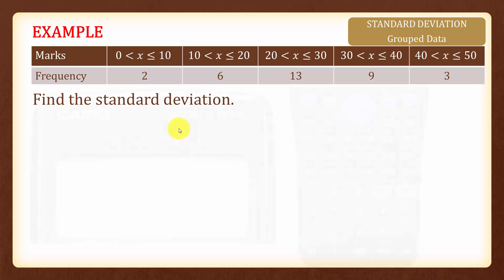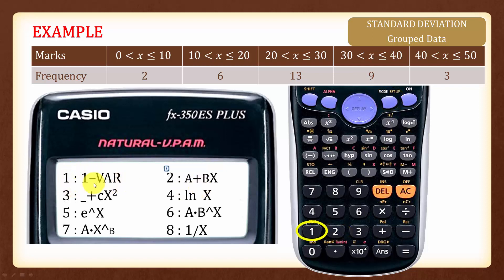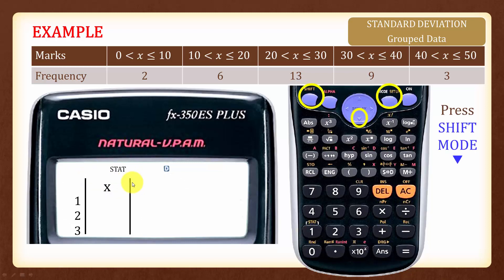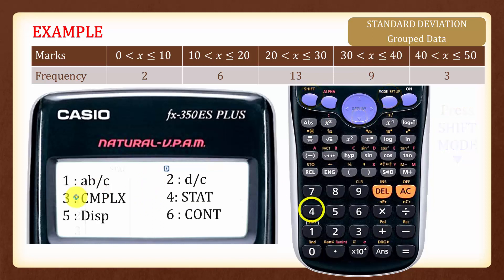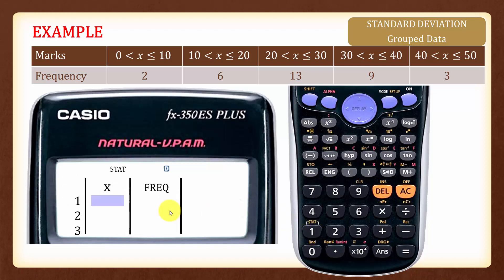Let us see how to find the standard deviation using this calculator. First, we will press the Mode button, which will give us the menu screen, and we will press 2 for statistics, then press 1, which represents standard deviation. You will notice that the frequency column is missing. To get that, we will press Shift Mode followed by the down key until you get the settings screen, then press 4. The calculator will ask whether you want the frequency on or off — press 1 to turn the frequency on. You can now input the table into the calculator.